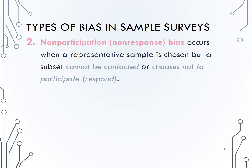A second type of bias you should know about is called non-participation, or more often, non-response bias. Non-response bias occurs when we obtain a representative sample, but a subset of our sample cannot be contacted or chooses not to respond.